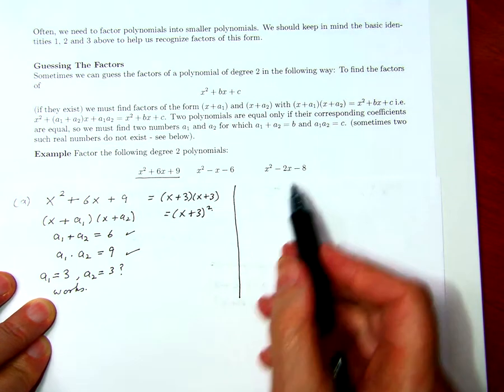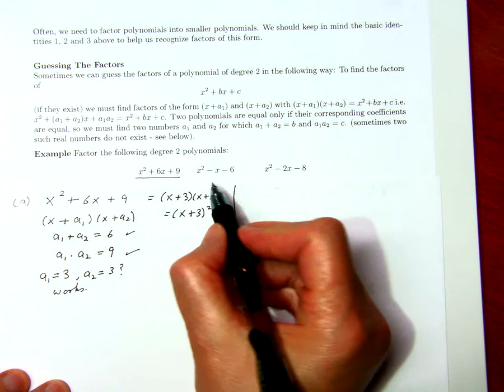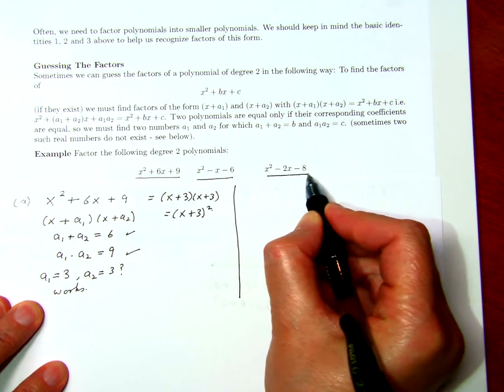You should try to find the factors of the other two polynomials of degree 2, and then check if your answers are the same as mine when you're done.